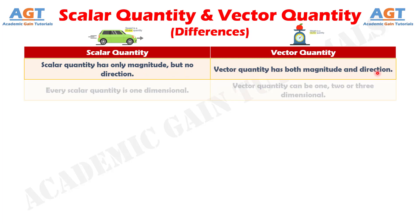Number two: every scalar quantity is one-dimensional, whereas vector quantity can be one, two, or three-dimensional.